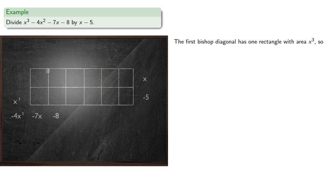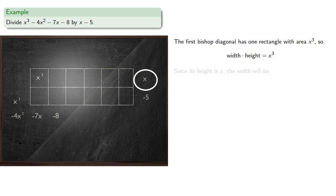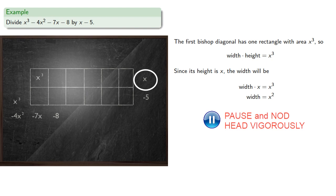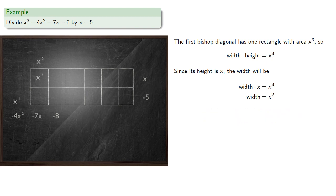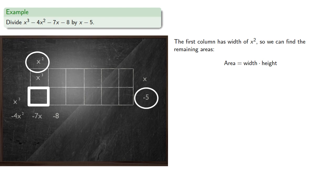The first bishop diagonal has one rectangle with area x cubed, and so the area — width times height — must be x cubed. Since its height is x, the width must be x squared. Now the first column has a width of x squared, so we can find the remaining areas. This rectangle must have area width times height; we know the width is x squared and the height is negative 5, so the area will be negative 5x squared.